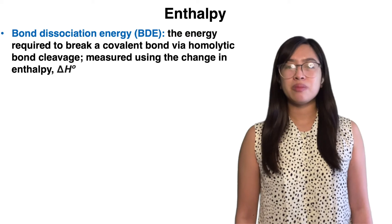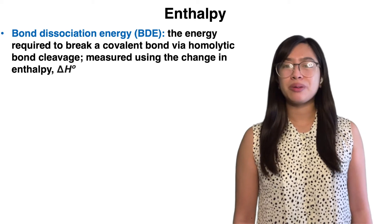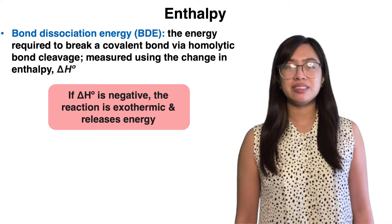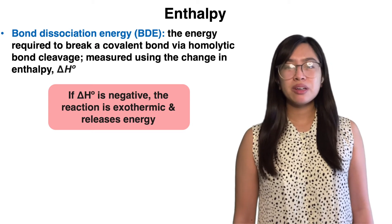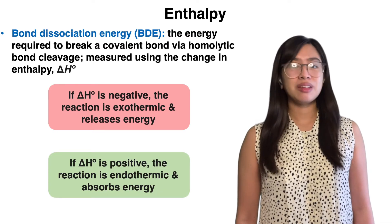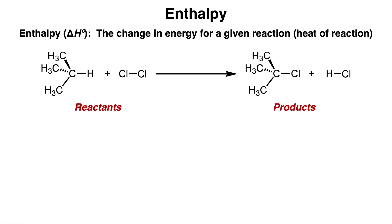This is termed bond dissociation energy, or BDE, which is measured using the change in enthalpy, or delta H. In a chemical reaction, if the overall delta H is negative, this means that the reaction is exothermic and is releasing energy. But if the overall delta H is positive, then the reaction is endothermic and absorbs energy. Because most reactions are more complex and often involve the breaking and forming of several bonds, we have to take into account each bond being broken and formed.